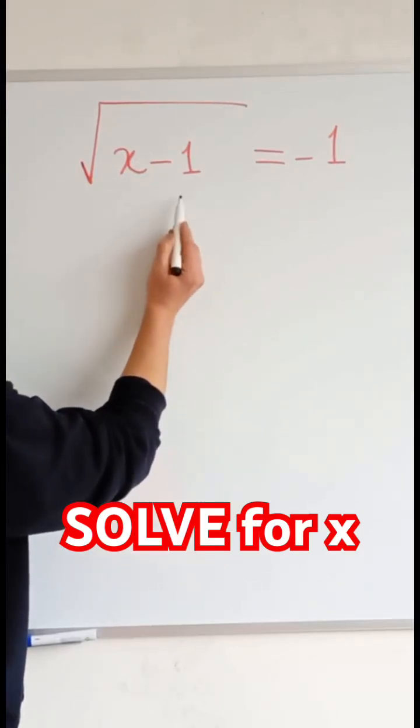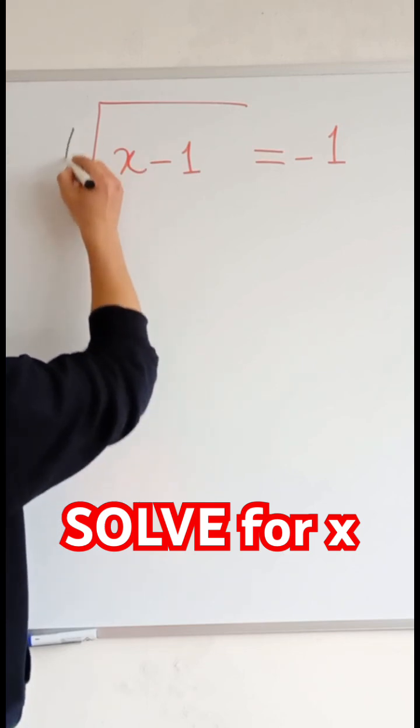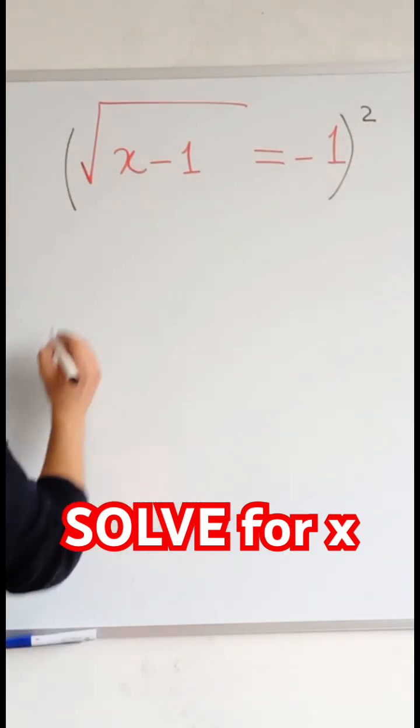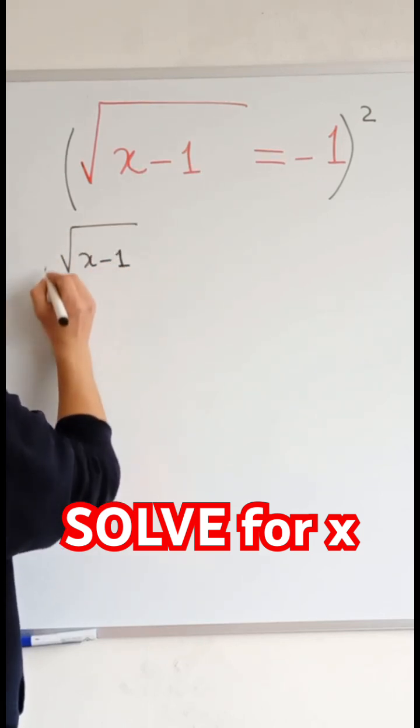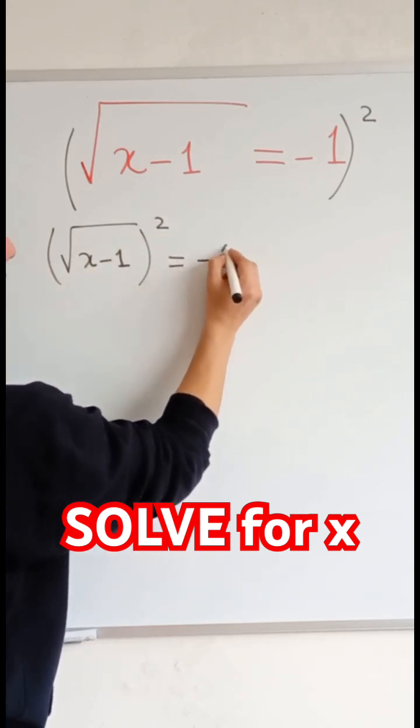Square root of x minus 1 equals minus 1. Raise both sides to the power of 2, so square root of x minus 1 to the power of 2 equals minus 1 squared.